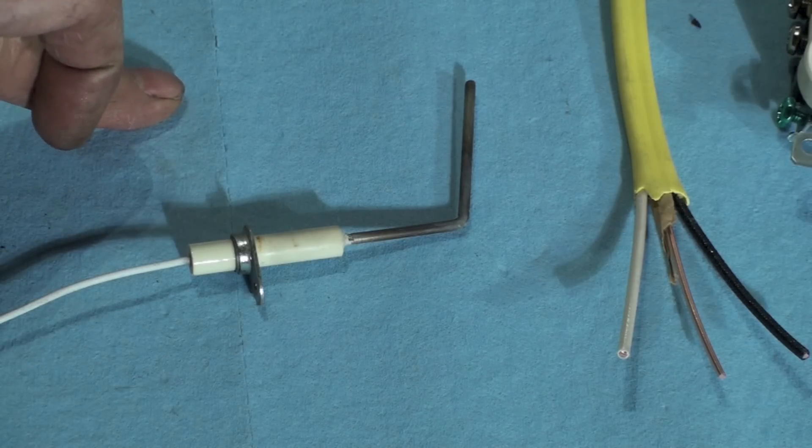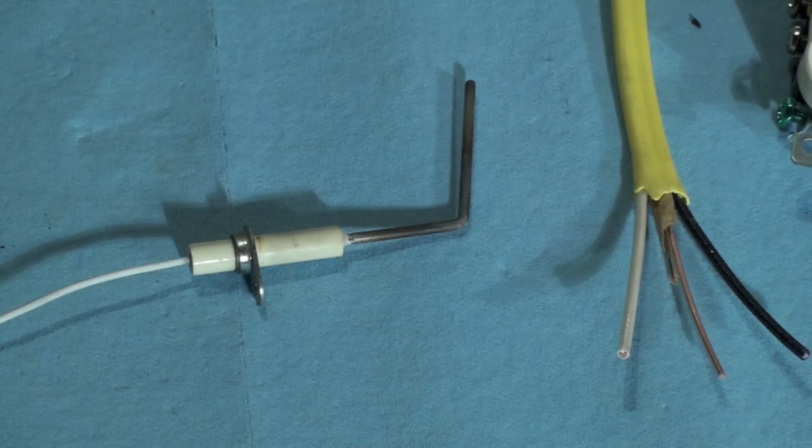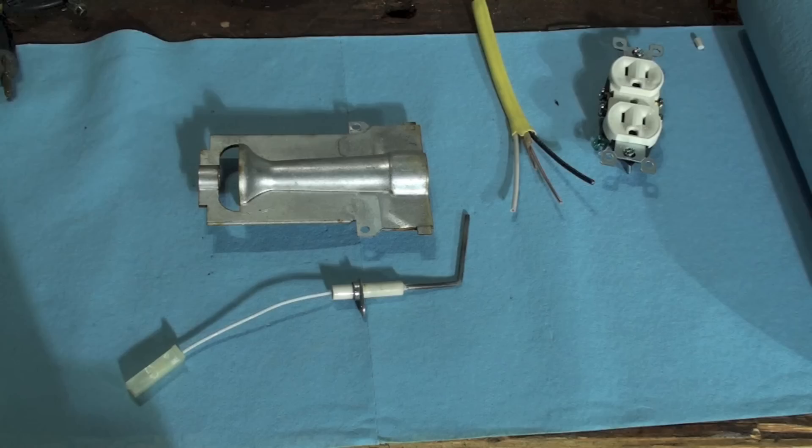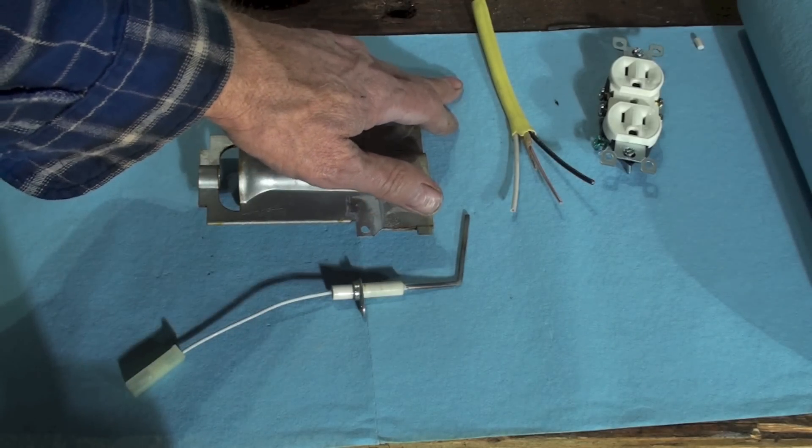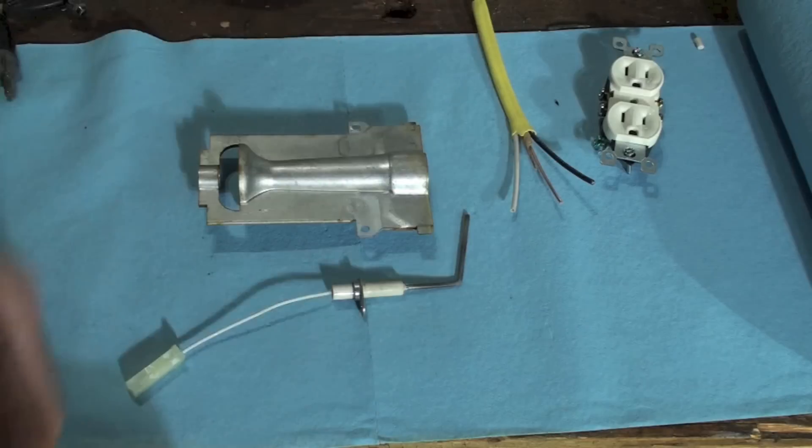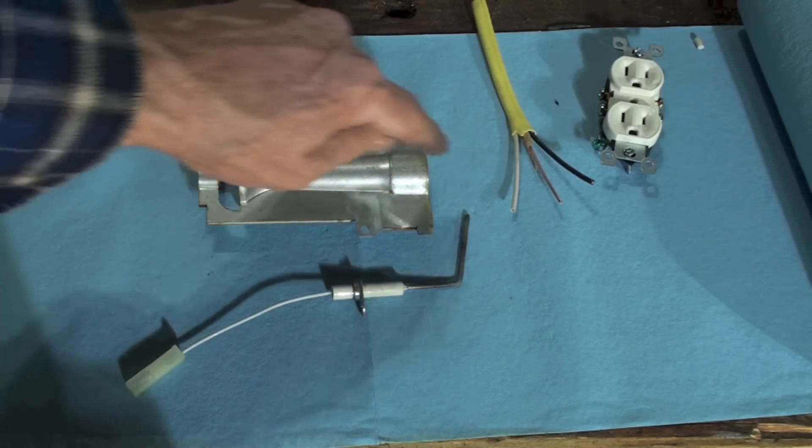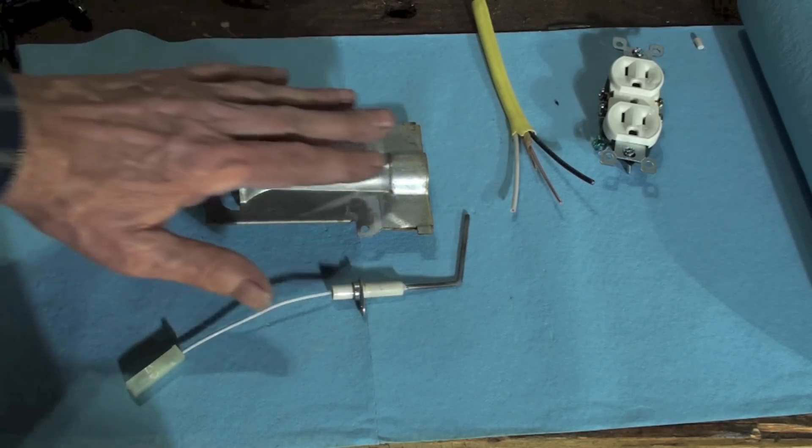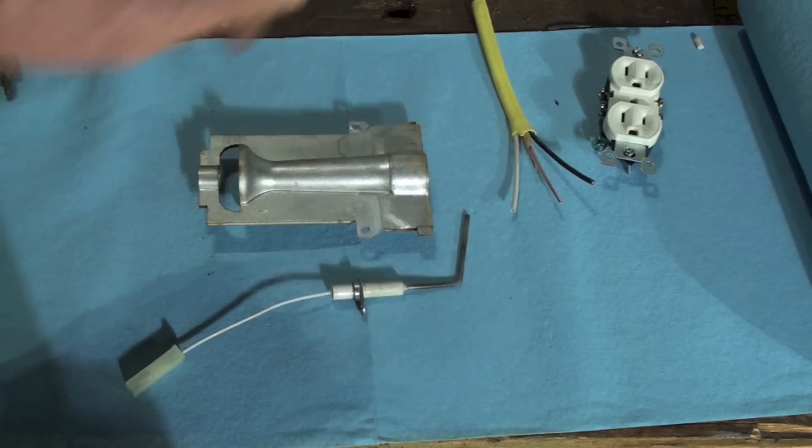Well, when the hot lead coming into the appliance is backwards, then it's trying to feed power from the chassis of the furnace back through the flame rod. Now that makes sense. Let me grab a burner. So if I all of a sudden made the hot wire the white as it went into the furnace...